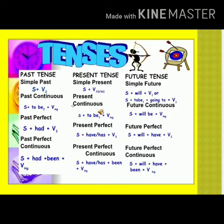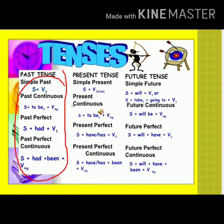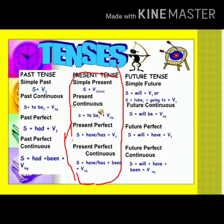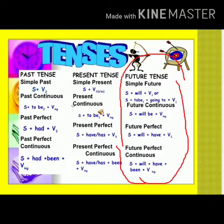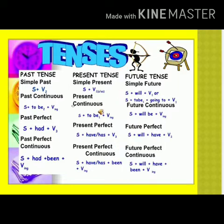We are going to study twelve different types of tenses. Past tense is divided into four sub-parts: simple past, past continuous, past perfect, and past perfect continuous. Present tense is divided into: simple present, present continuous, present perfect, and present perfect continuous. Future tense is divided into: simple future, future continuous, future perfect, and future perfect continuous. Let us start with present tense and its four sub-types.